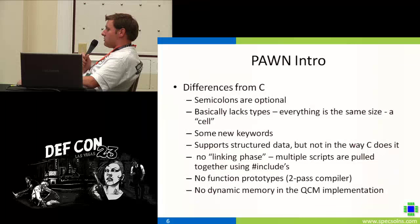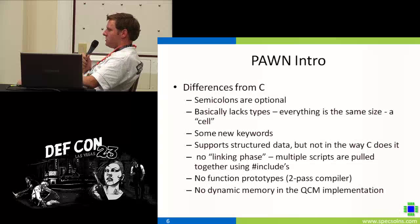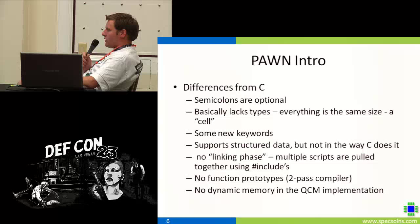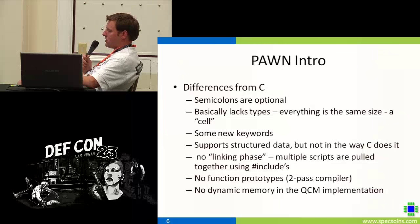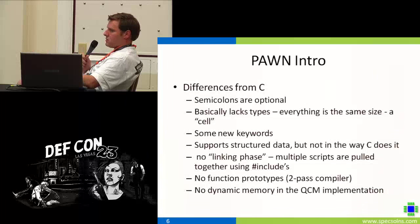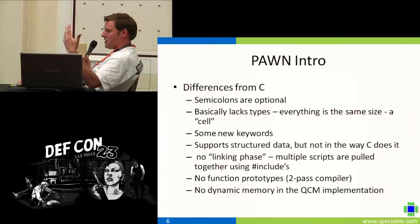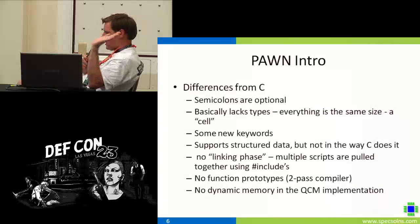There's no linking phase with the Pawn compiler. If you have a script that spans multiple files, you have to pull them all together using includes. No function prototypes. In this badge implementation, there's no dynamic memory. If you globally allocate an array and use it across functions — if CAN messages are coming in you can use that data — but once that function returns, that data is gone unless you copied it someplace else.